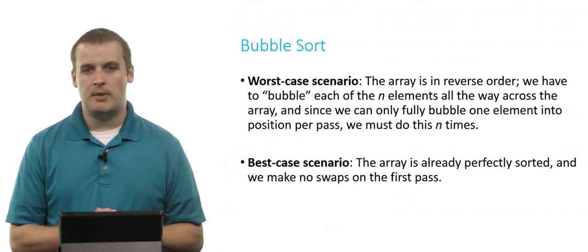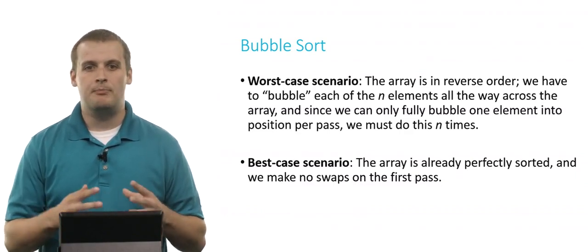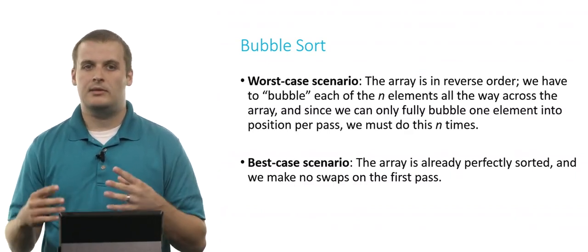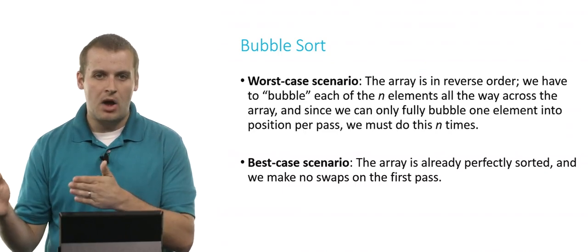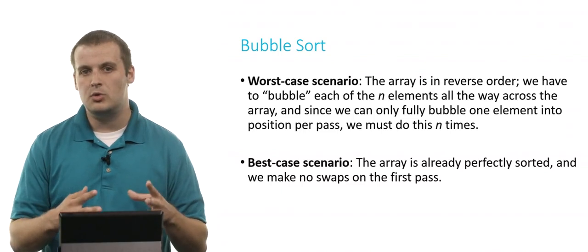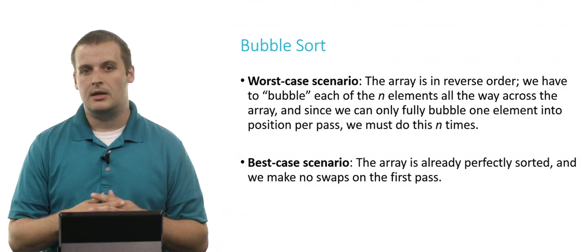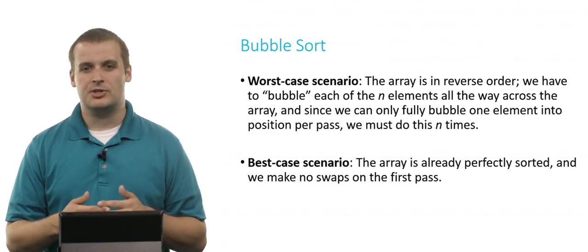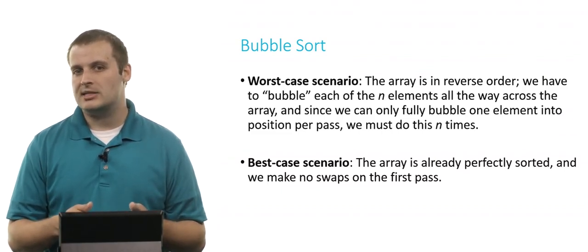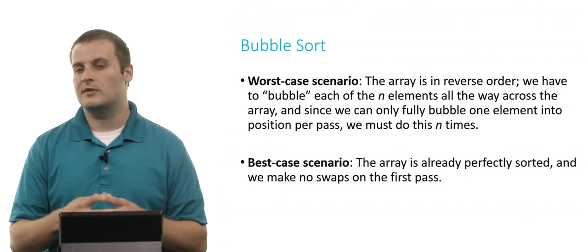What's the worst case scenario with bubble sort? In the worst case, the array is in completely reverse order, and we have to bubble each of the large elements all the way across the array. We also have to bubble all of the small elements back across. So each of the n elements has to move across all of the other n elements. In the best case, the array is already sorted when we go in, and we don't have to make any swaps on the first pass, so we don't have to repeat the process multiple times.